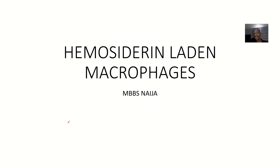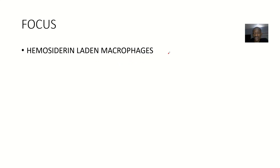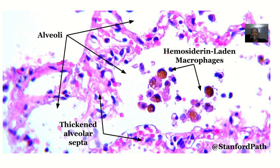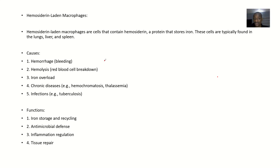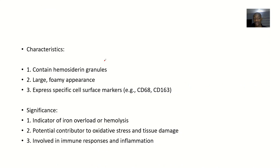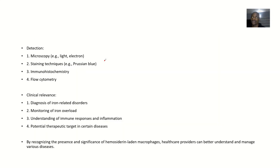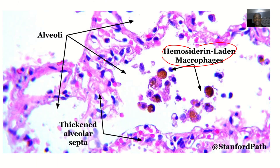There's another concept in anatomical pathology known as hemosiderin-laden macrophages. We are looking at the concepts of that list, so wherever you see hemosiderin-laden macrophages, you can know what they mean. We'll be talking about it from the definition, where this type of cells could be found, the causes, what could make these cells to be there, the functions, the characteristics, how they derive their name, and the significance — the clinical relevance.